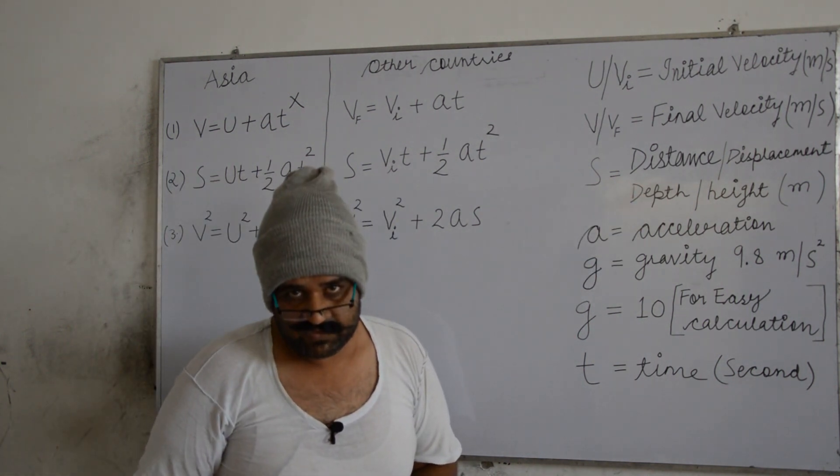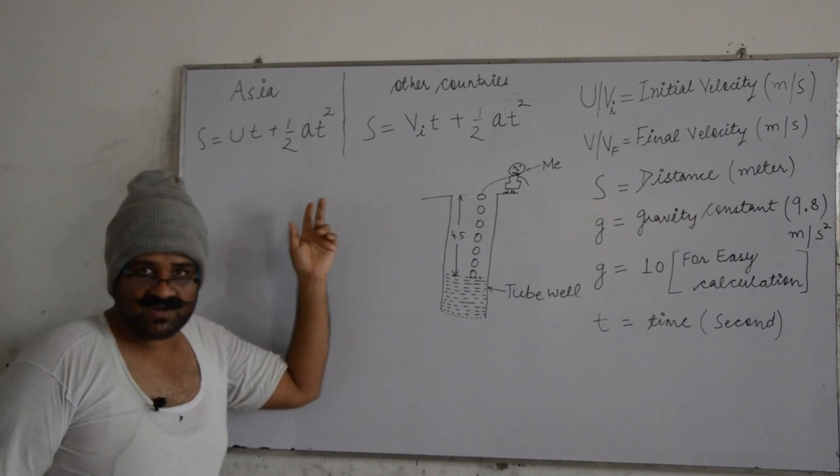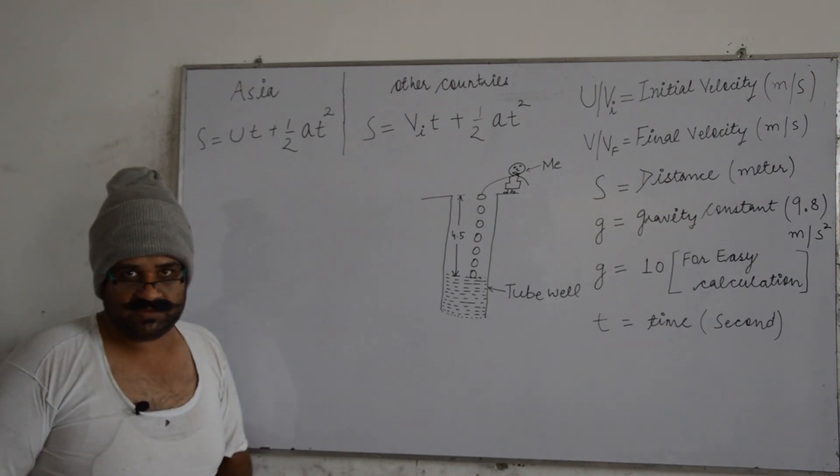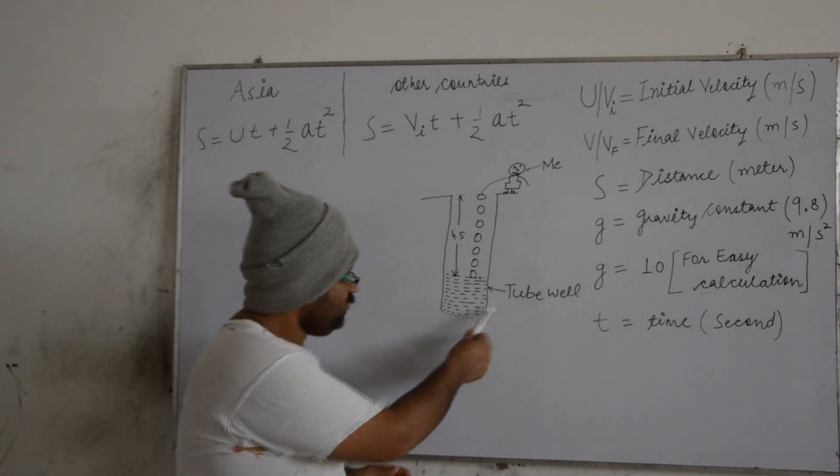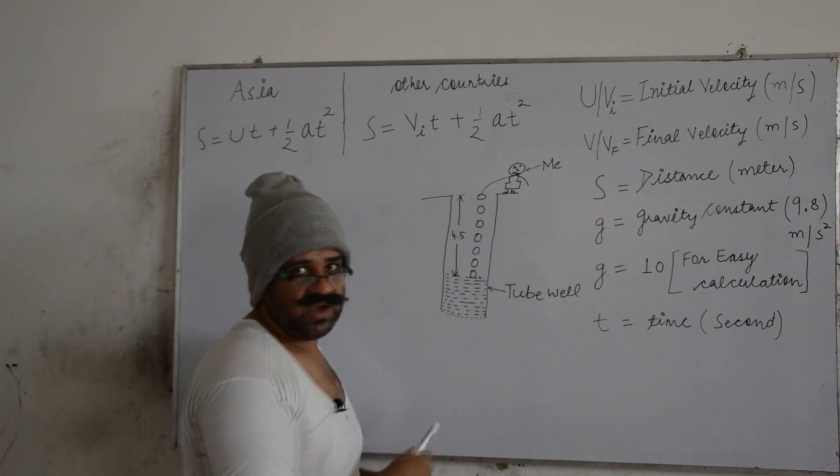In third equation again bloody s is there and final velocity is also there and I have not taught you final velocity so far. Therefore we're going to use second equation of motion to determine the distance and depth of the water. Making sense to you? Are you with me so far? This is our second equation of motion.